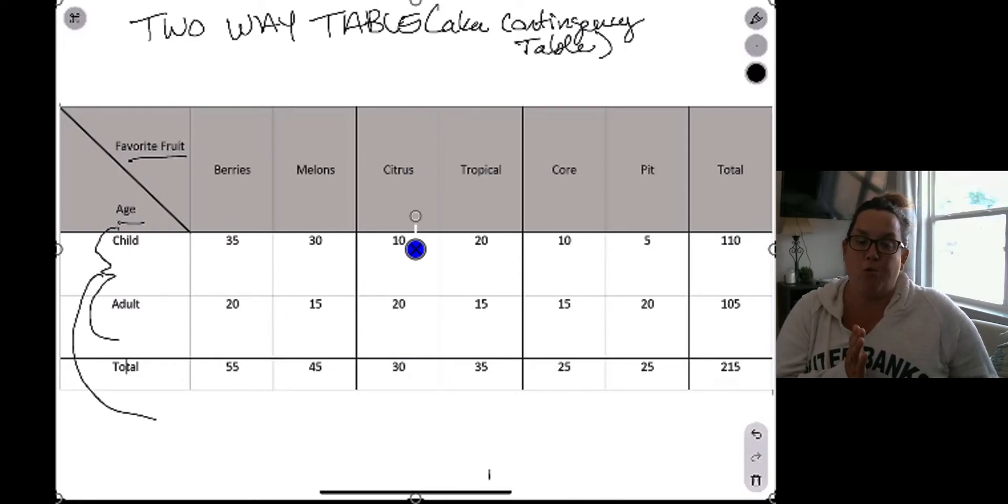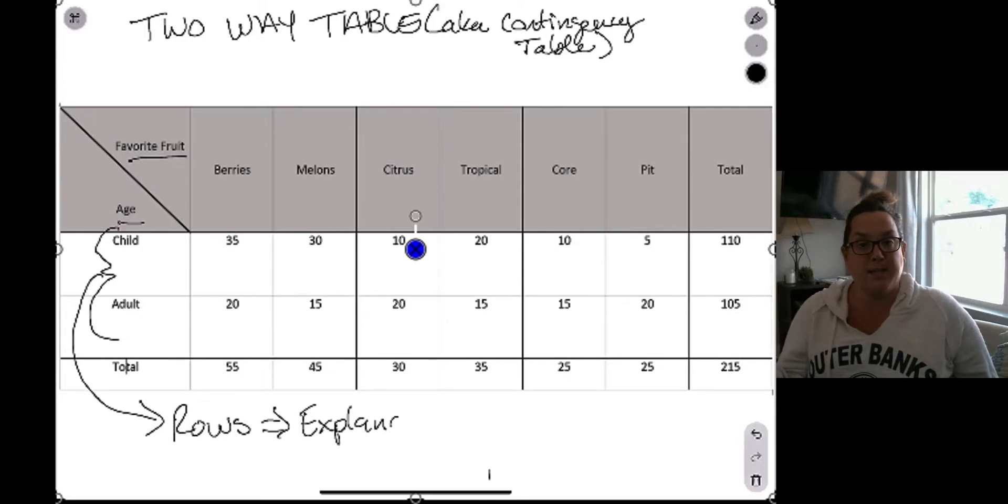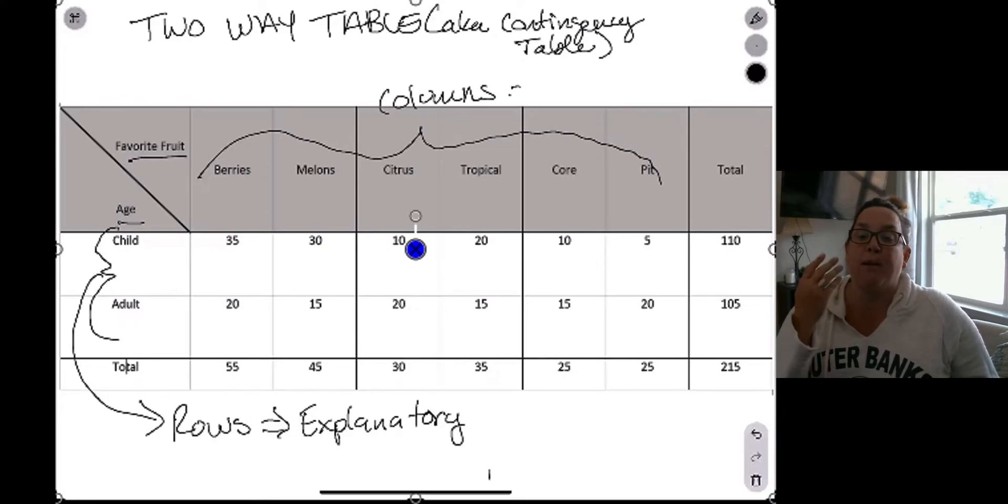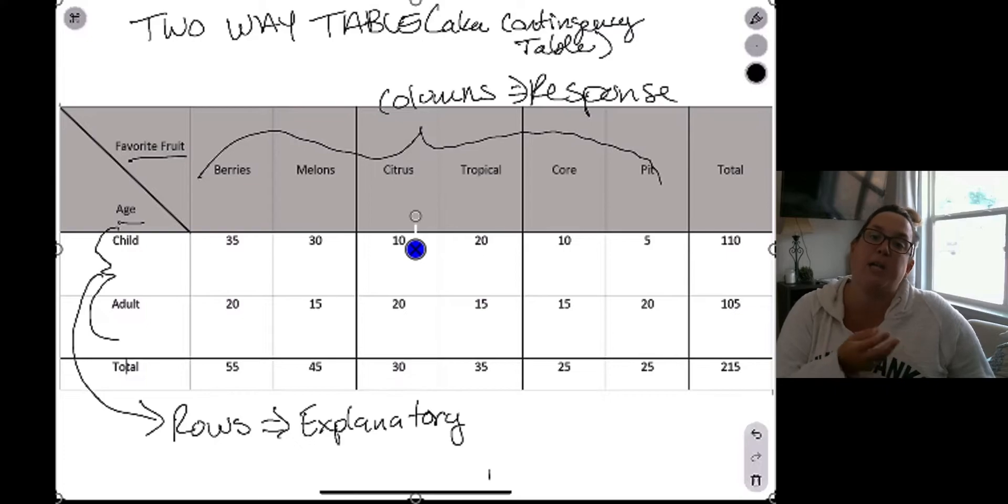In the rows we have our ages, and the appropriate way to set up these contingency tables is to have the rows represent the explanatory variable. Now remember, in the explanatory response, explanatory is explaining and then the columns is the response variable. So here we would expect that age would dictate the type of response you have for favorite fruit.